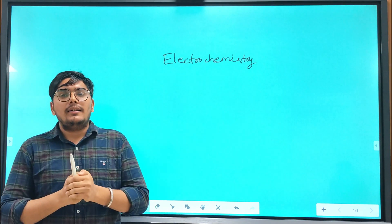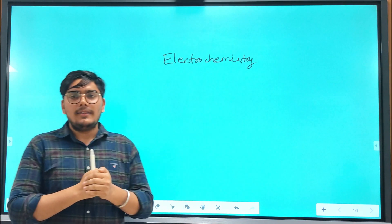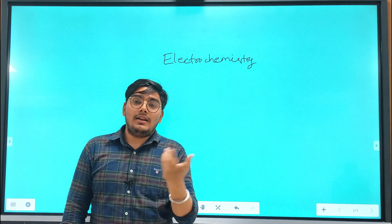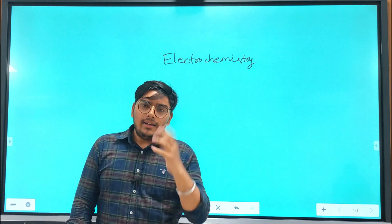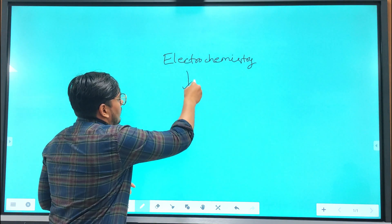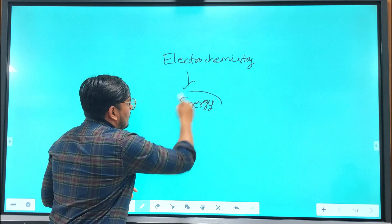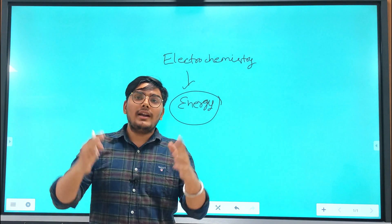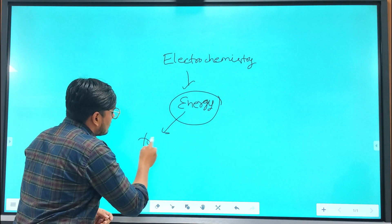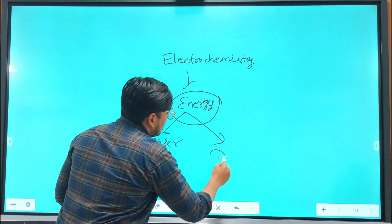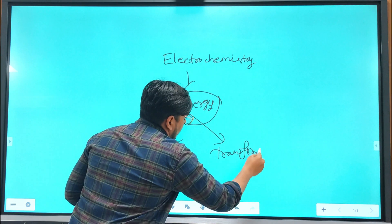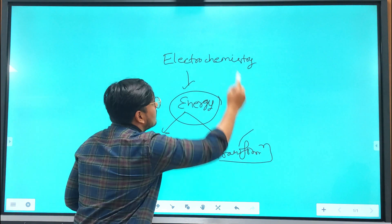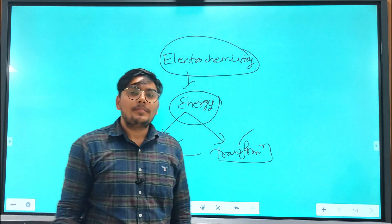Today we will discuss electrochemistry — what we read in it and the construction criteria for a cell. In chemistry, we read about energy, and the term energy can be divided by two criteria: one is the transfer of energy, and another is the transformation of energy. In this chapter, we will discuss electrochemistry under the transformation of energy.